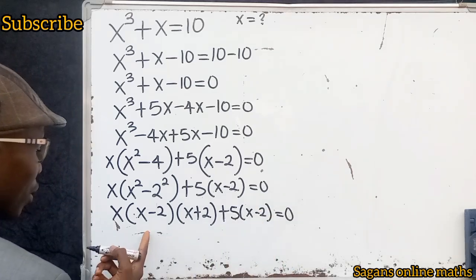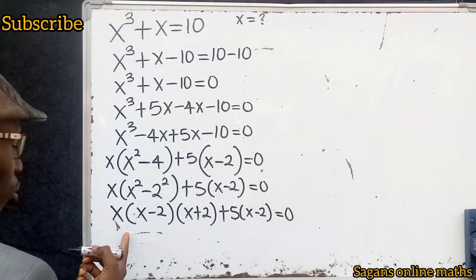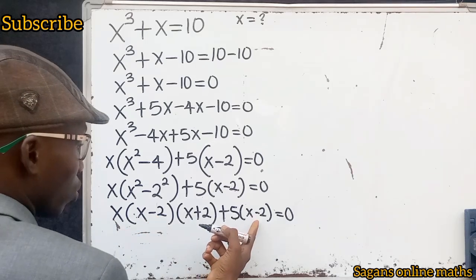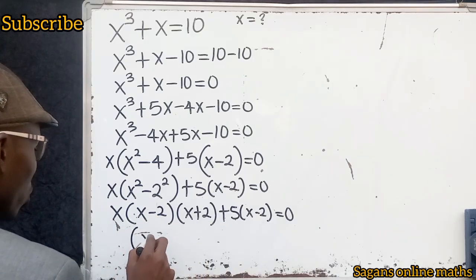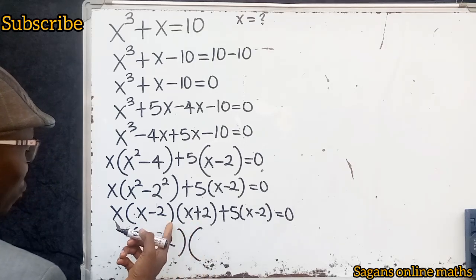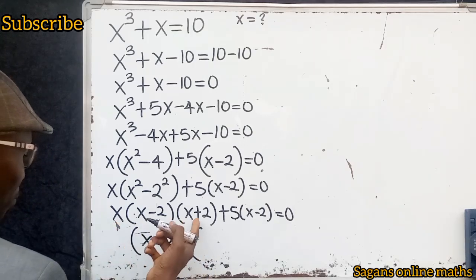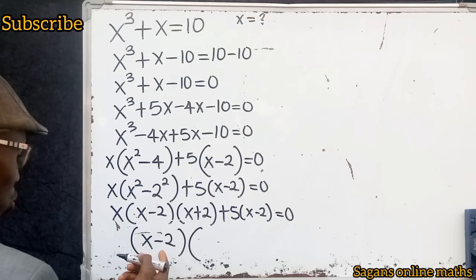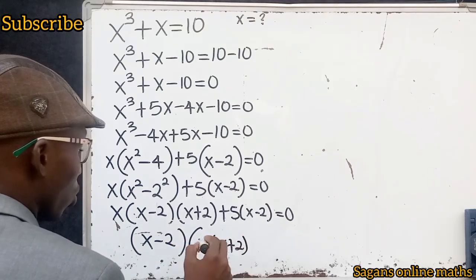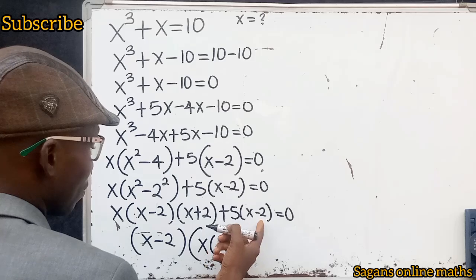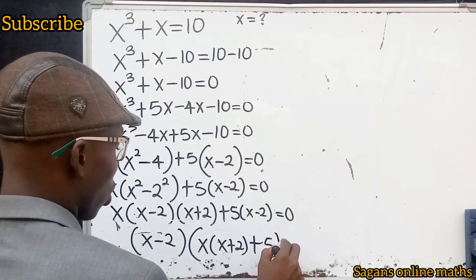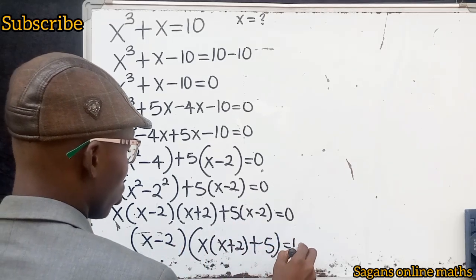Looking carefully, x minus 2 is common in both terms. So we factor out x minus 2, giving x minus 2 into x times x plus 2 plus 5, equals 0. Dividing through by x minus 2, we are left with x into x plus 2 plus 5, equals 0.